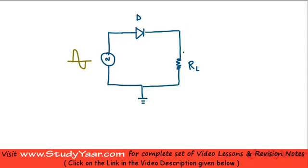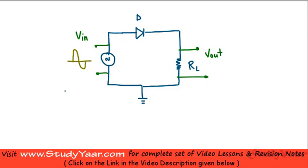Let's just say this is my V out. I want to see what is the voltage available over here. And this is my V in. So, I have applied an input sinusoidal AC voltage as my input voltage over here, and I am going to try to see what is happening to my output voltage.